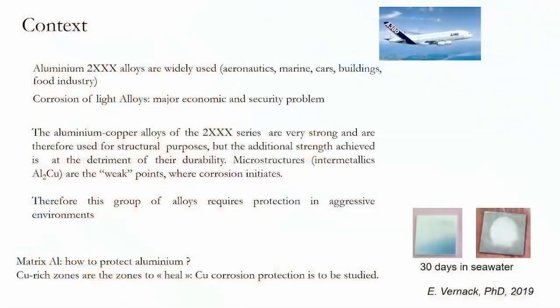Aluminium alloys are widely used in many applications and they are prone to corrosion. Aluminium alloys contain copper and there is a problem of microstructures — for example, Al₂Cu microstructures — and this is why when we look for solutions for aluminium corrosion, we also look for solutions for copper, because we know that the copper-rich zones are the source where the alloy is susceptible to pitting.